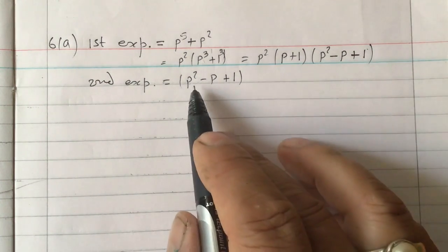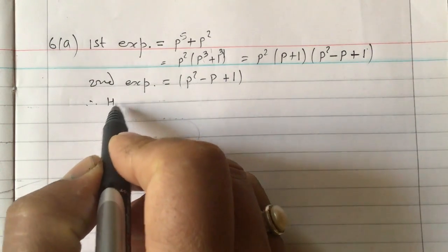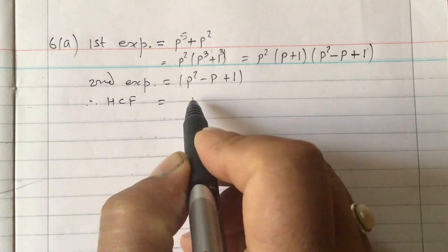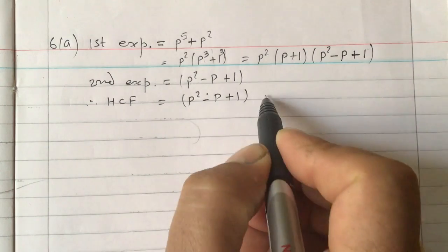This p square minus p plus 1, here also p square minus p plus 1 is common, so therefore HCF is equal to p square minus p plus 1, this is your answer.